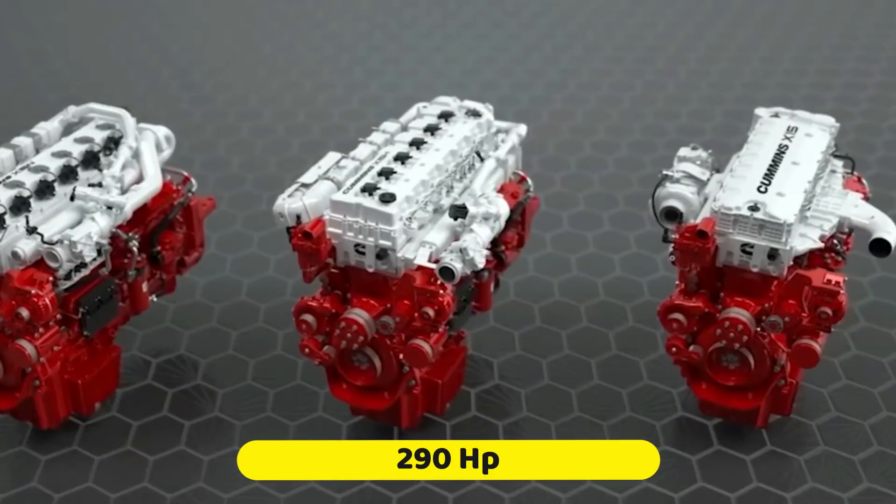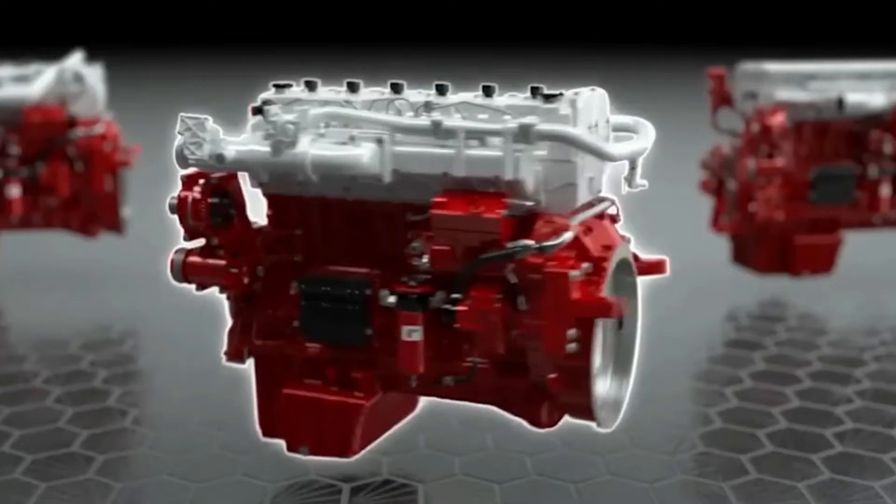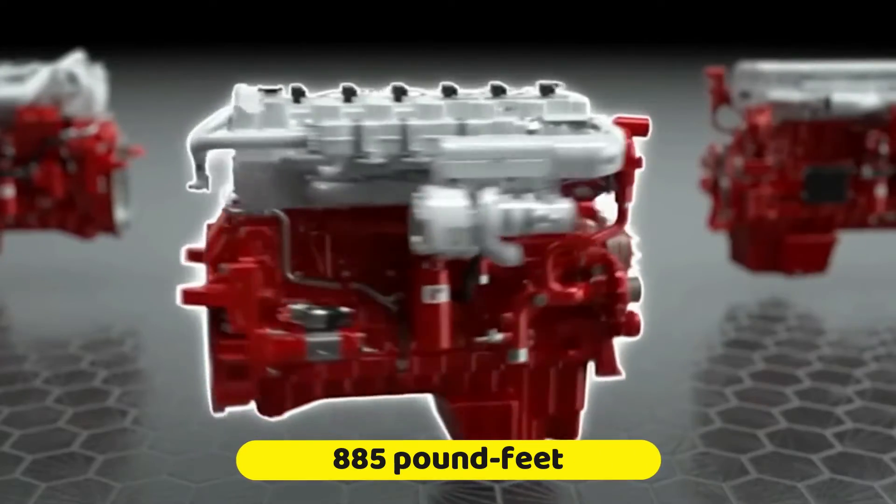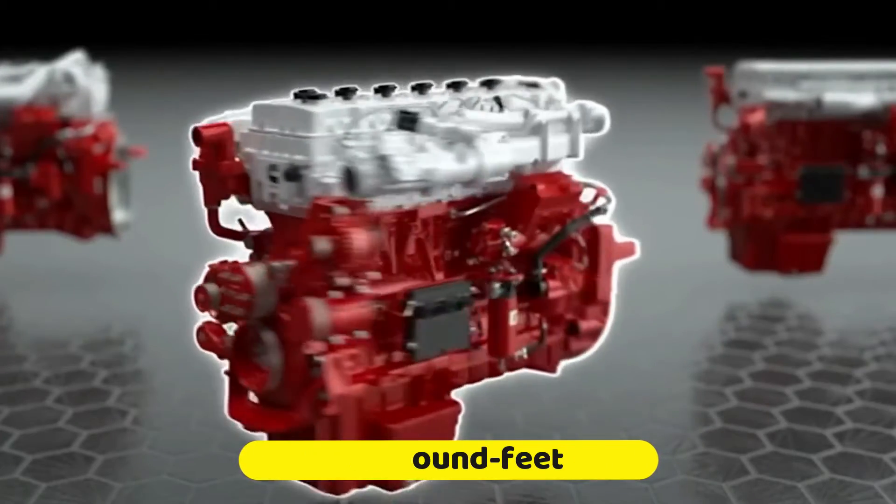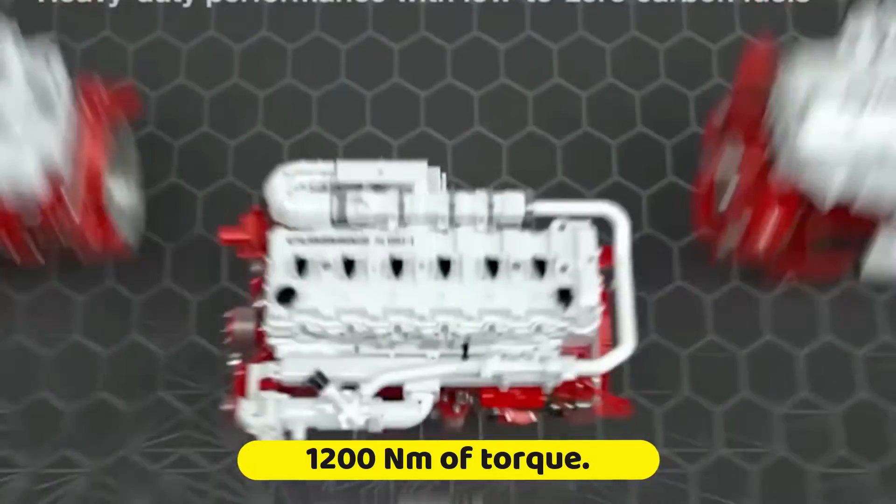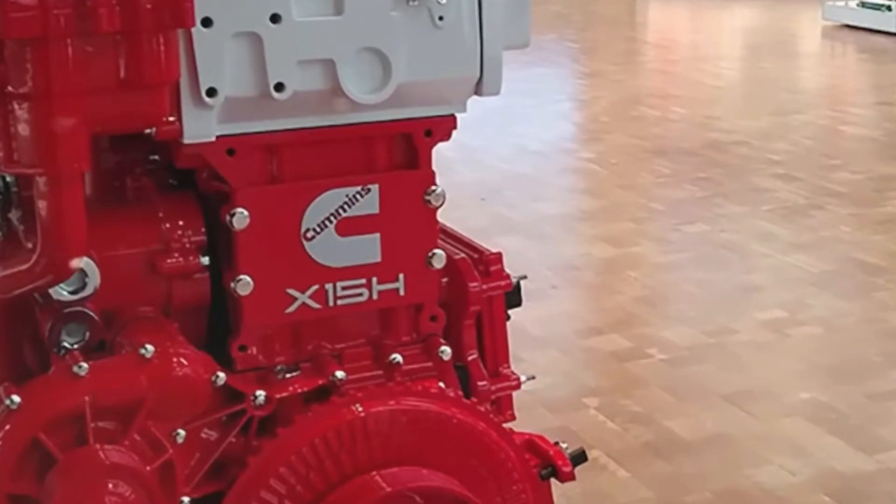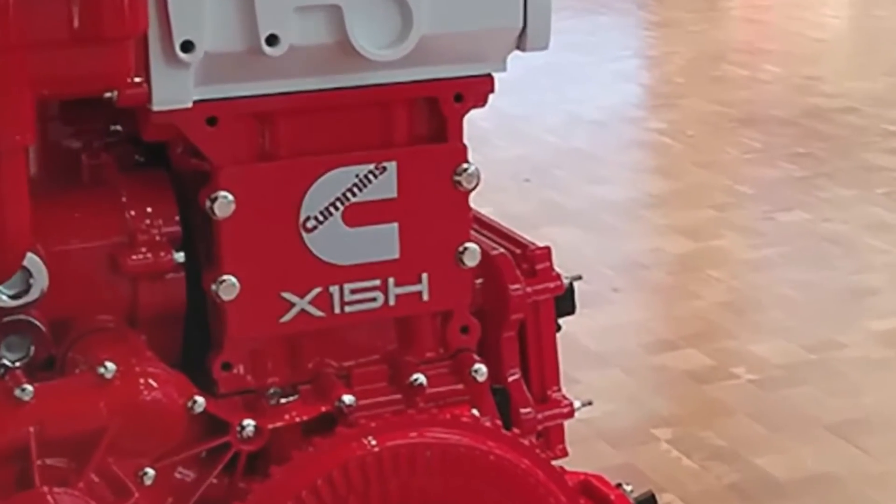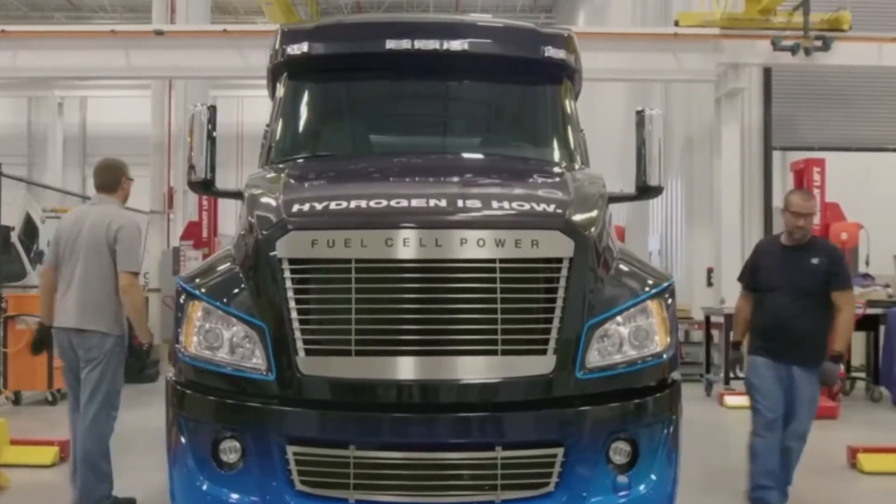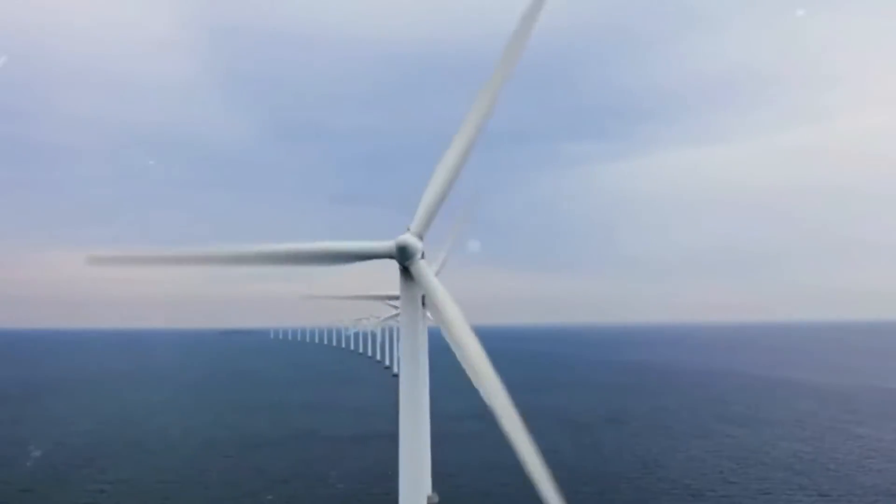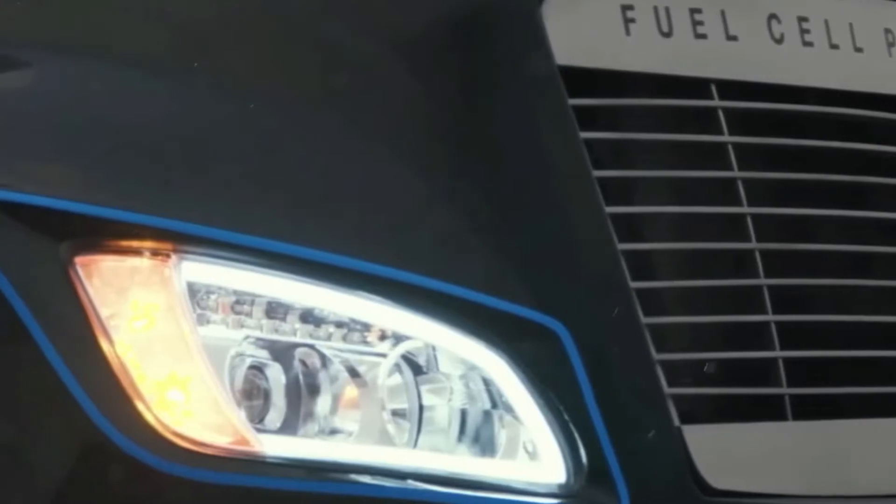And the version the company recently presented also shows some quite impressive figures. The max output is rated at 290 horsepower, while the max torque goes all the way up to 885 pound-feet, or if you prefer 1200 newton-meters of torque. Cummins, as well as many experts, sees these engines like this as a sustainable solution that can ensure environmentally friendly operations of all kinds of machinery, including the most challenging applications.